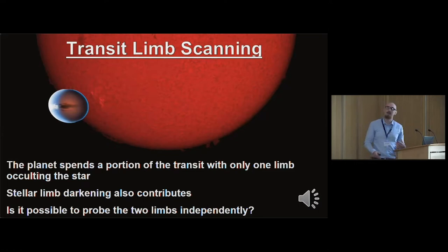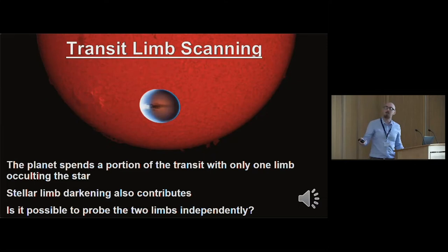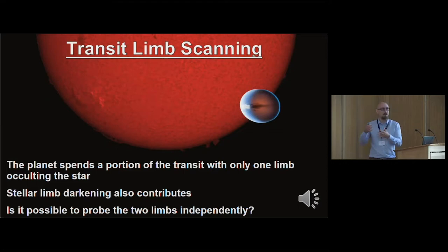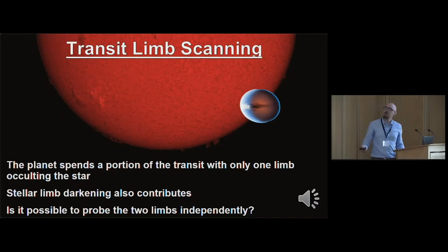At the beginning of the transit, only one limb of the planet is over the star. As you go through, there's a center where the whole thing is covered. Then at the other end of the transit, the other limb is transiting and the first one is off the star. Throughout the transit, you have a differential weighting of which parts of the planet's atmosphere contribute to your transmission spectrum as a function of time. So can you use this to probe the two limbs independently?